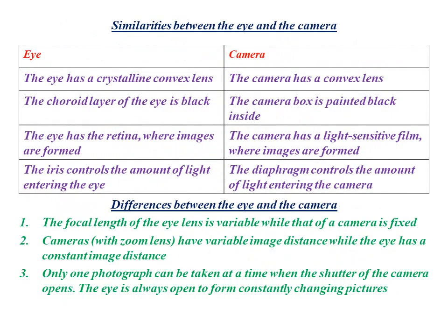Now let's look at the similarities between the eye and the camera. The first similarity is that the eye has a crystalline convex lens which converges rays of light, similarly to the convex lens of the camera. The second similarity is that the choroid layer of the eye is black, similarly the camera box is painted black inside — the purpose being to absorb any stray rays of light. The third similarity is that the eye has a retina where images are formed, similarly the camera has a light-sensitive film where images are formed. The iris controls the amount of light entering the eye, similarly the diaphragm controls the amount of light entering the camera.